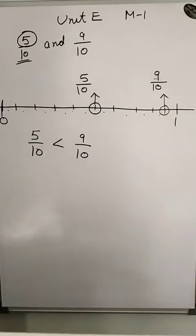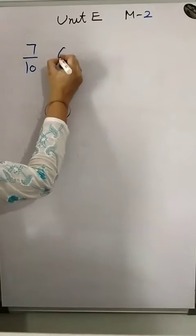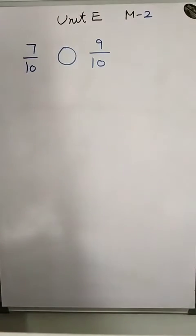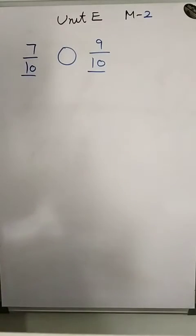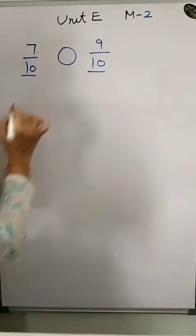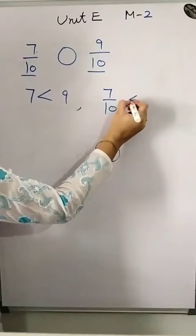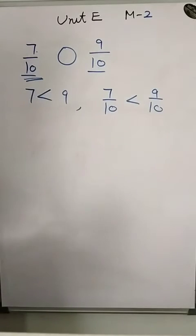In this way you can compare numbers on the number line. Now from module 2, the question is 7 upon 10 and 9 upon 10. Here the denominators are equal, so we check only the numerators: 7 is smaller than 9, so 7 upon 10 is smaller than 9 upon 10. When denominators are equal, we check only the numerators.